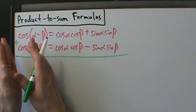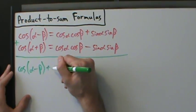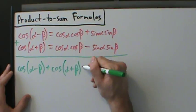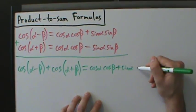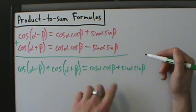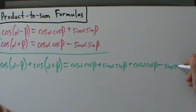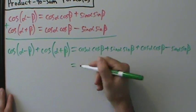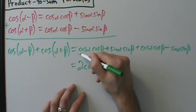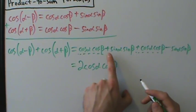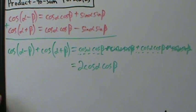Adding two equations means we add the left sides and separately add the right-hand sides. On the left side we get cos(α − β) + cos(α + β). On the right-hand side: cos α cos β + sin α sin β, plus cos α cos β − sin α sin β. The sine α sine β terms cancel, and the cosine α cosine β terms combine to give 2 cos α cos β.